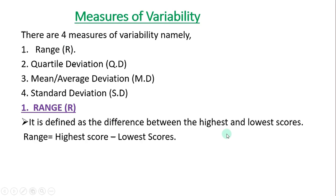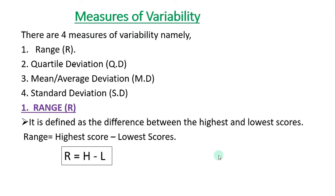What are the measures of variability? There are four measures of variability, namely range, quartile deviation, mean or average deviation, and standard deviation. Range is defined as the difference between the highest and lowest score — R is equal to H minus L.